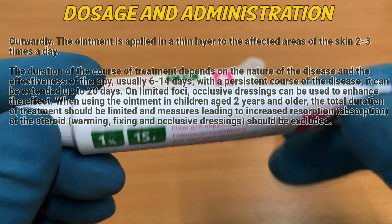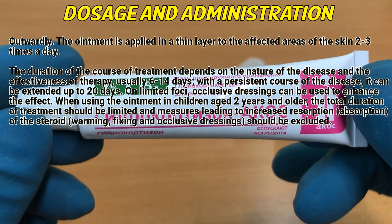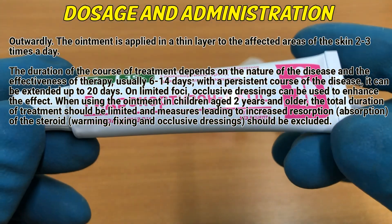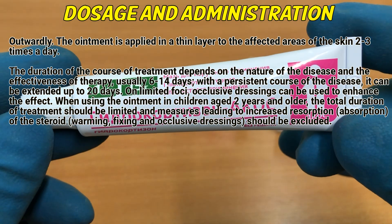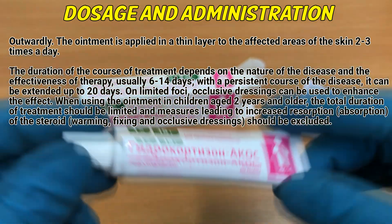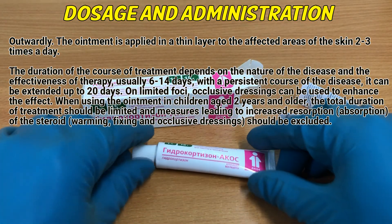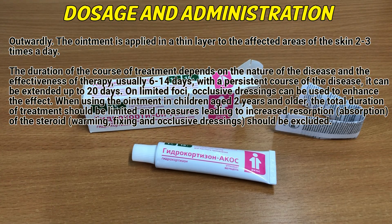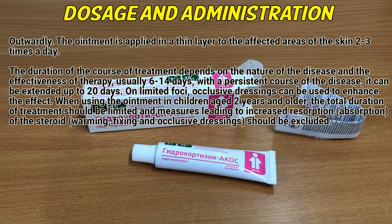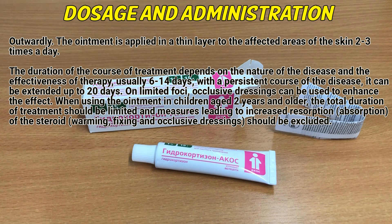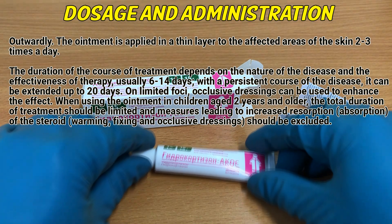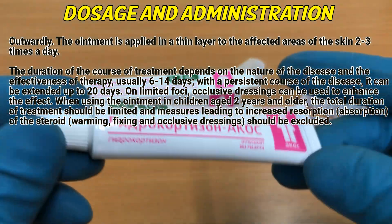Dosage and administration: the ointment is applied outwardly in a thin layer to the affected areas of the skin 2–3 times a day. The duration of the course of treatment depends on the nature of the disease and the effectiveness of therapy, usually 6–14 days. With a persistent course of the disease, it can be extended up to 20 days.